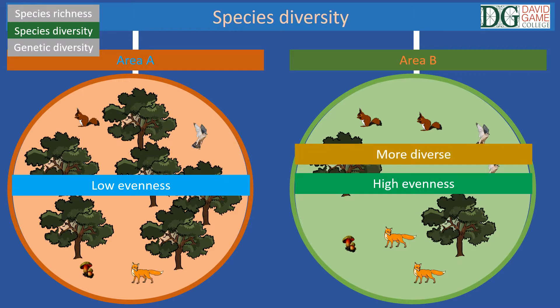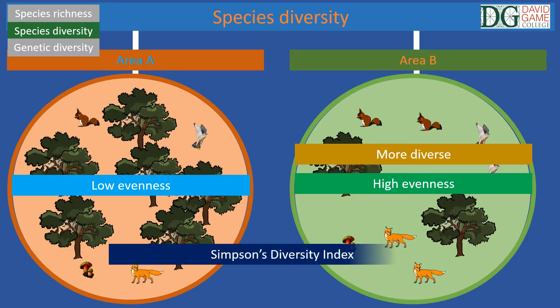Species diversity can be measured using different indices. The most notable and common is the Simpson's diversity index.